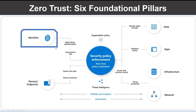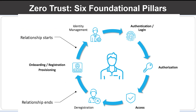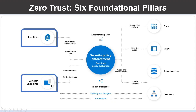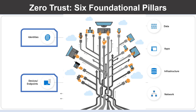Let us look into identities. These identities may be users, services or devices. When an identity attempts to access a resource, it must be verified with strong authentication and follow least privileged access principles. The next one is devices. These devices and workloads create a large attack surface as data flows from devices to on-premises workloads and the cloud. Monitoring devices for health and compliance is an important aspect of security.